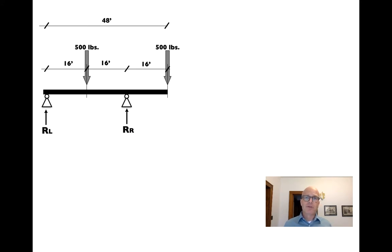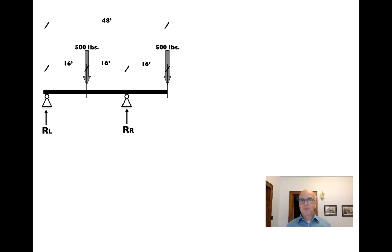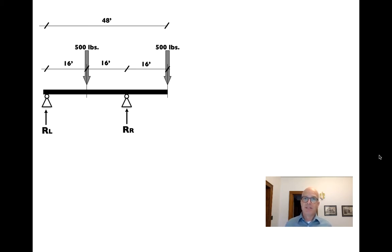We'll switch from simply supported beams to cantilever beams. A cantilever beam is any beam that extends out beyond one or both of its supports. We'll take similar dimensions to last time — a 32-foot beam with a 500-pound load — but we'll stretch it out. Instead of a 32-foot simple span, that 32 feet will be supplemented by a 16-foot cantilever on the right-hand end of the beam, and we'll throw in another 500-pound load way out at the end.